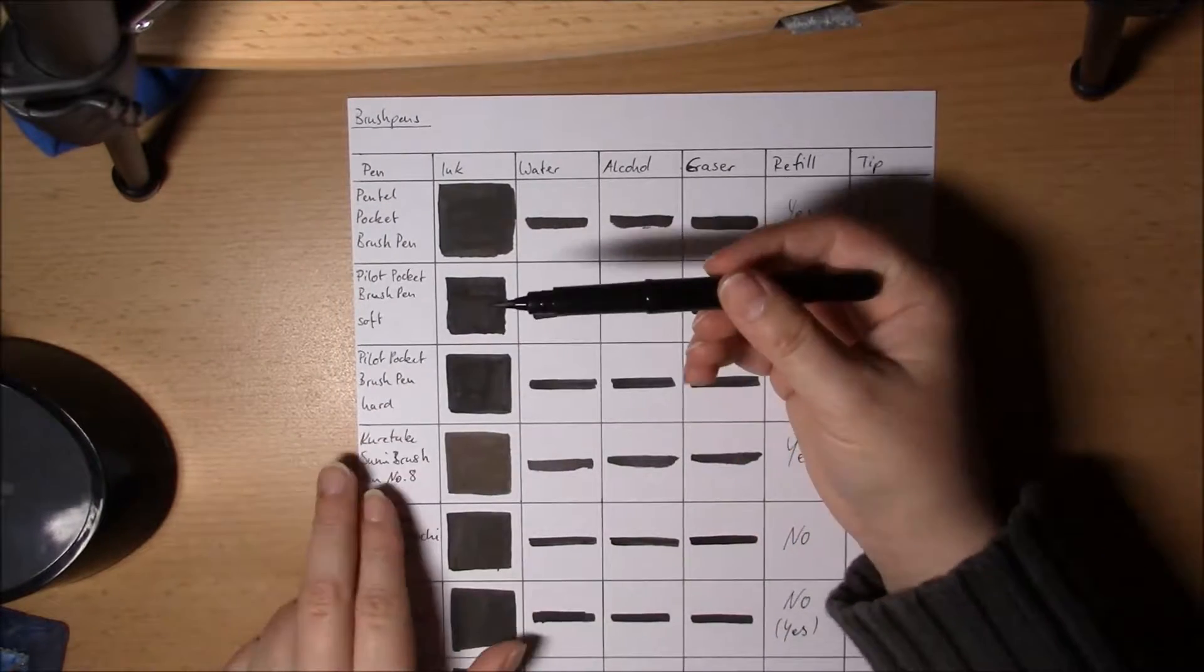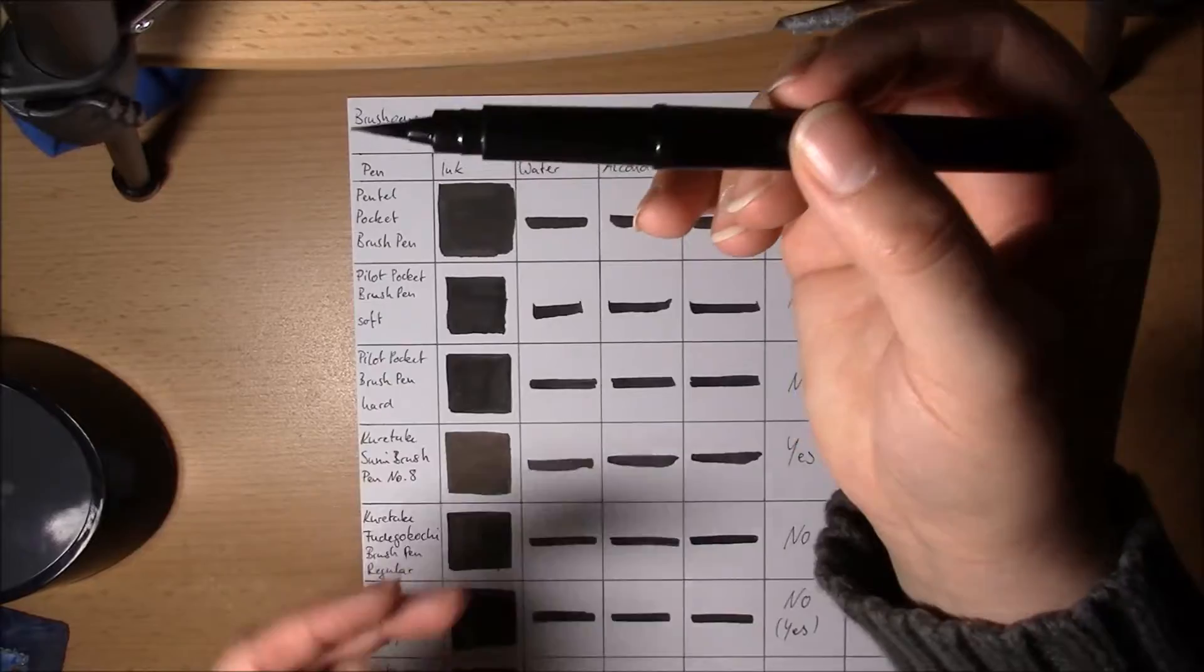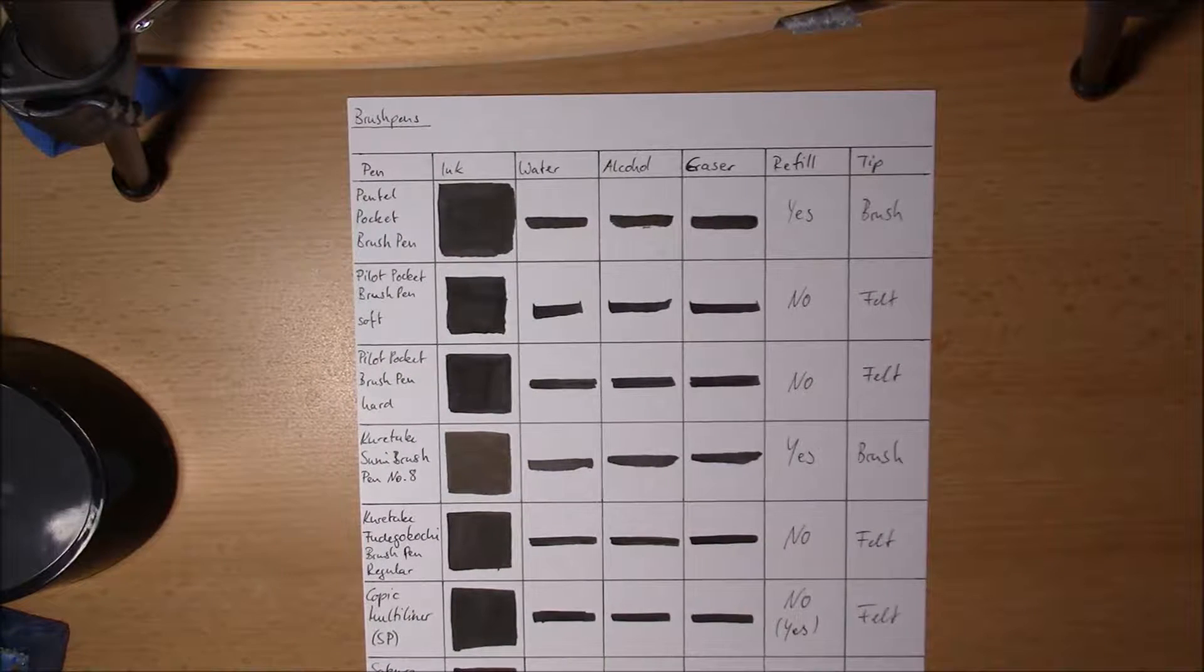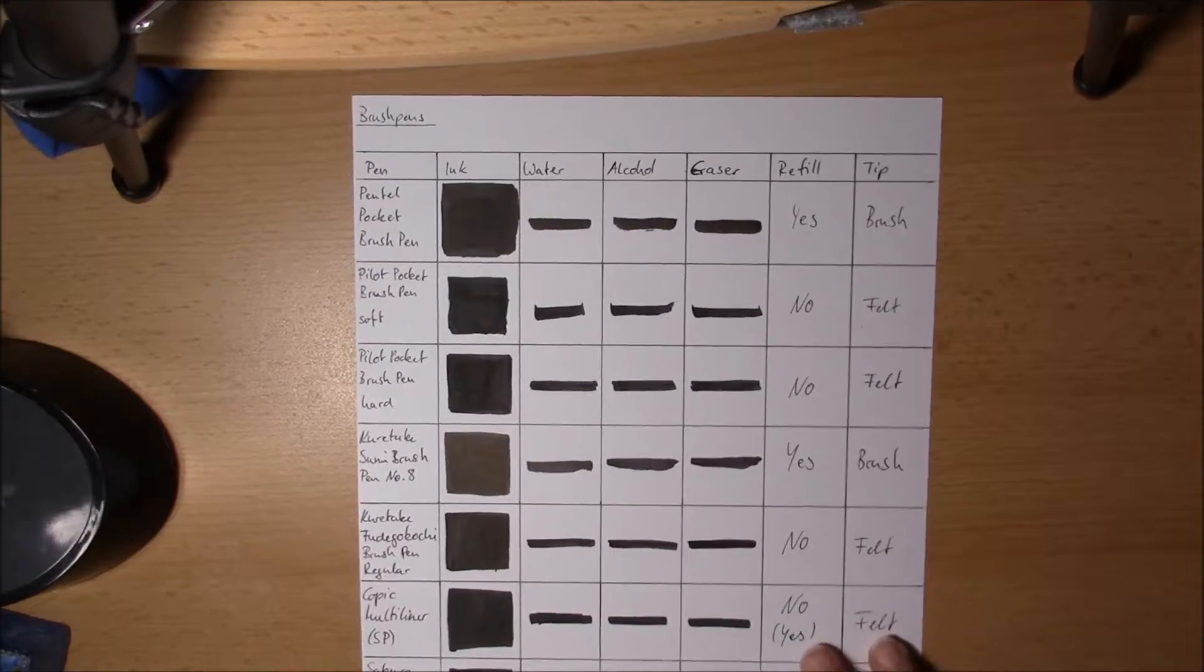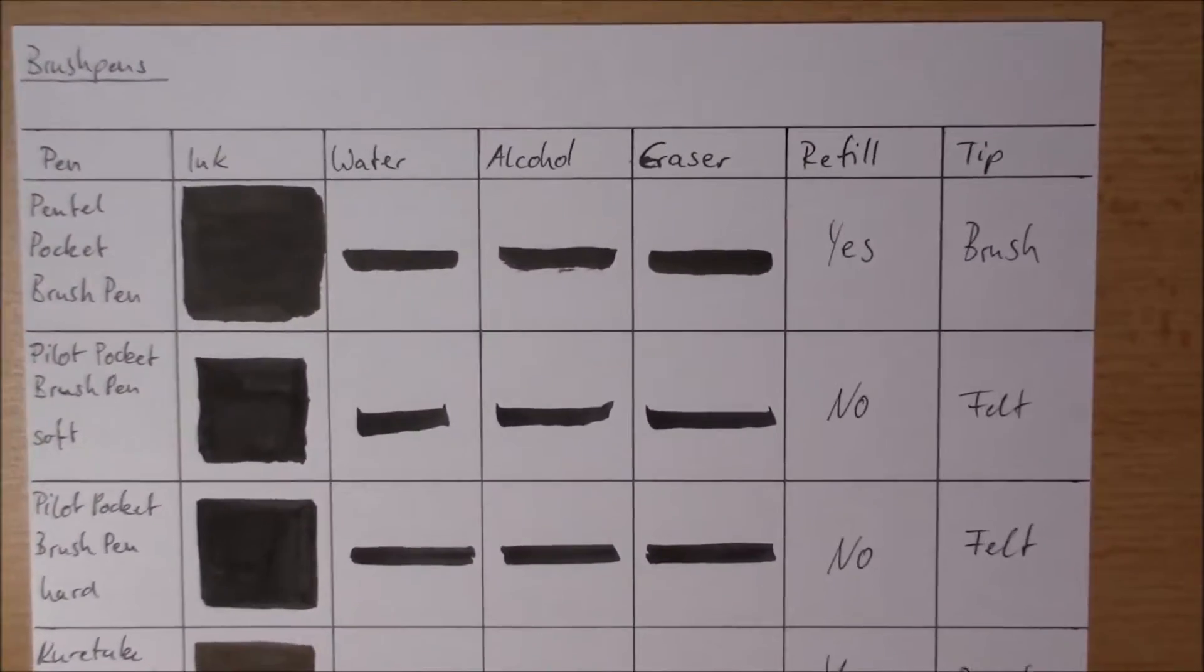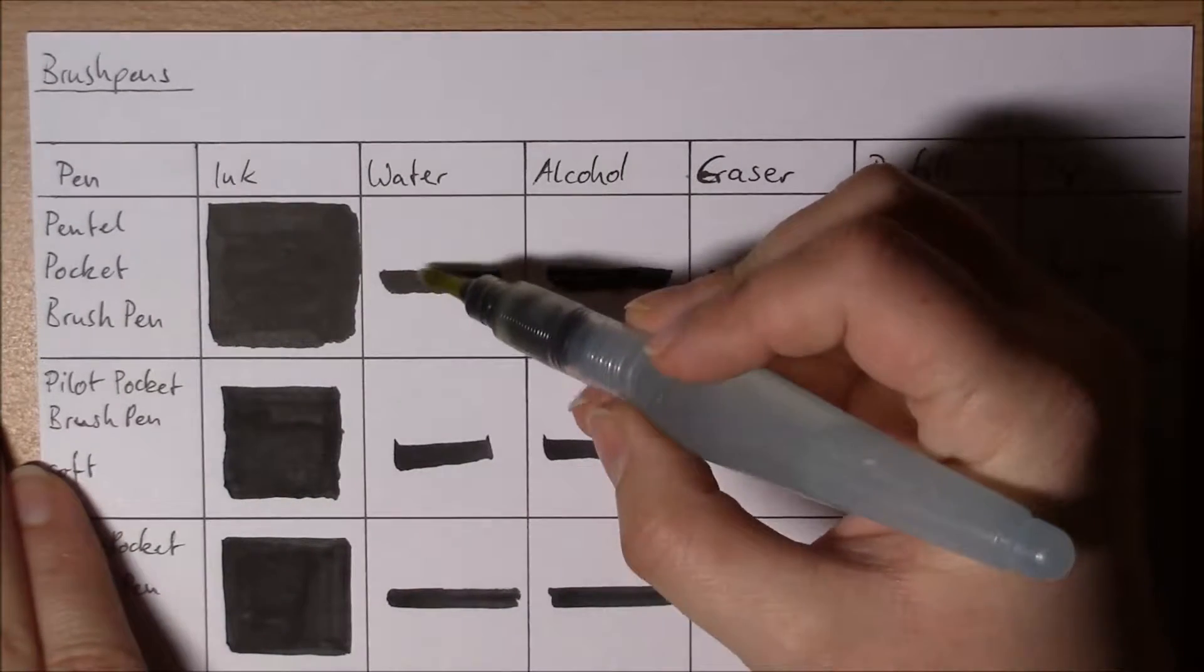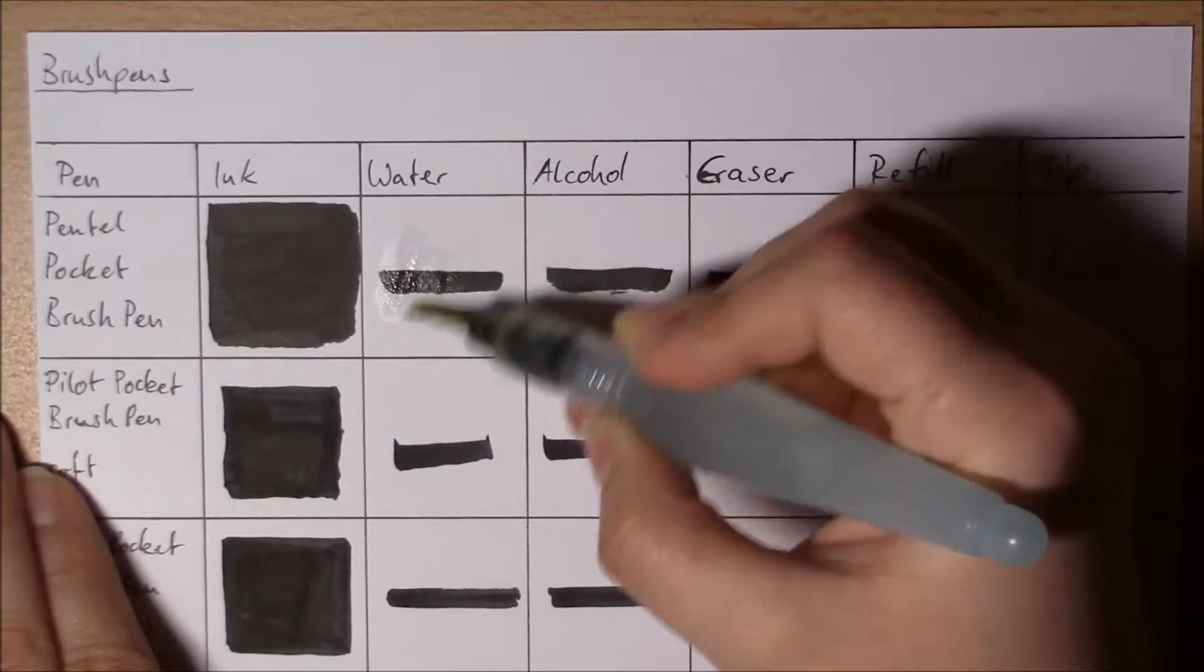At first I've got the Pentel Pocket Brush Pen. I think it's one of the more popular ones. It has a brush tip as you can see. It comes with refills and it's one of my favorites. I've had some people say it is water resistant and some say it isn't. I think it also depends on the paper you use. So this one is kind of a Bristol board.